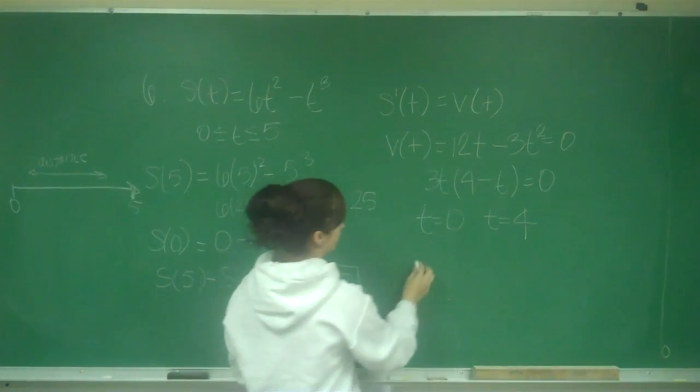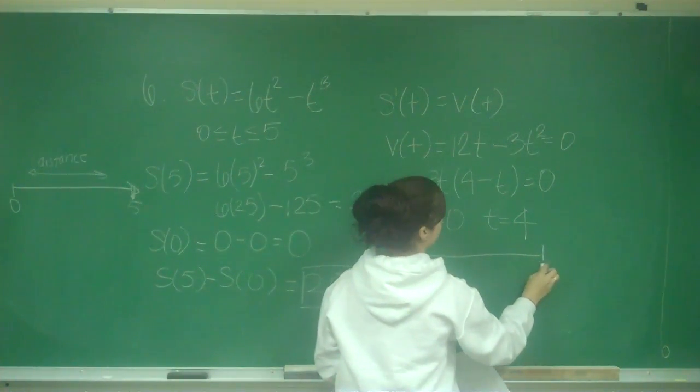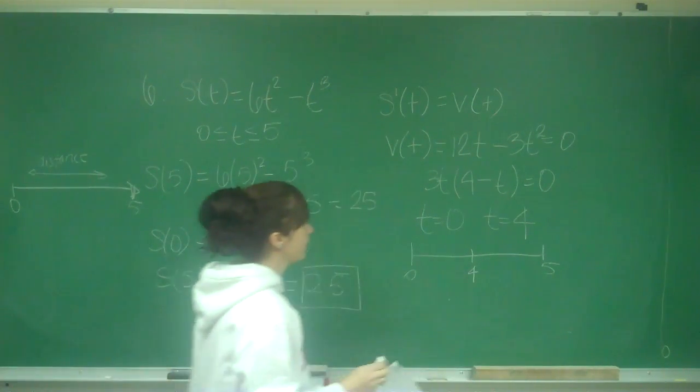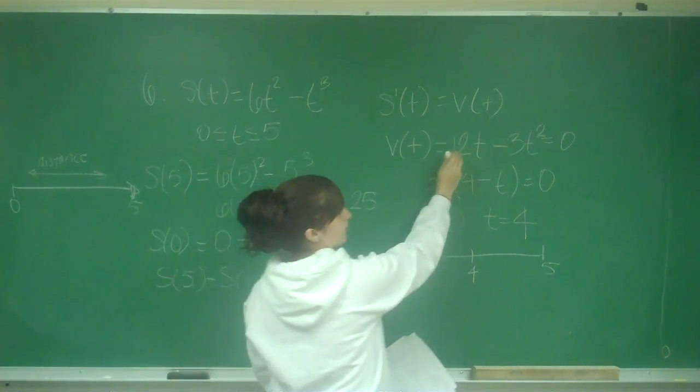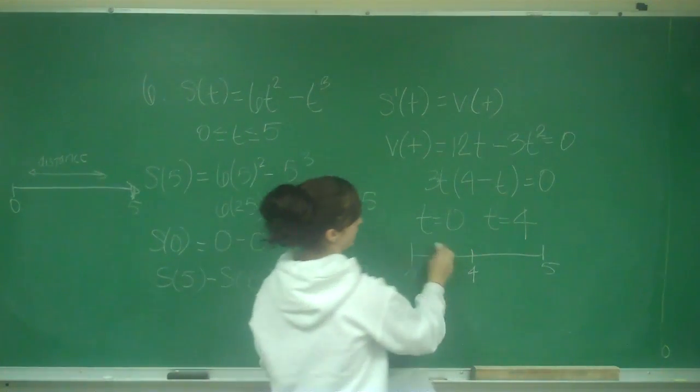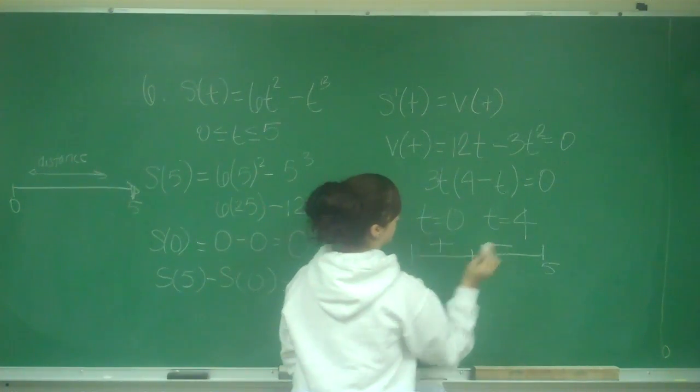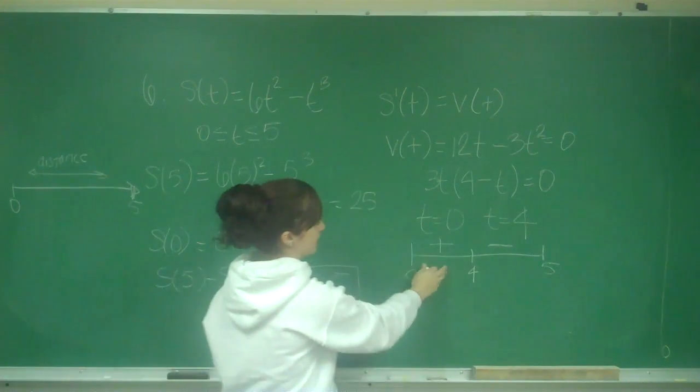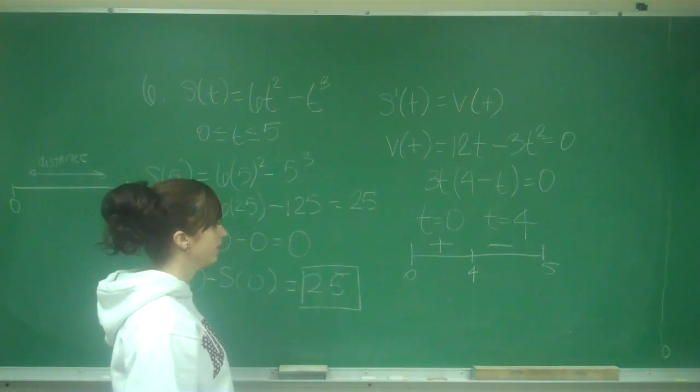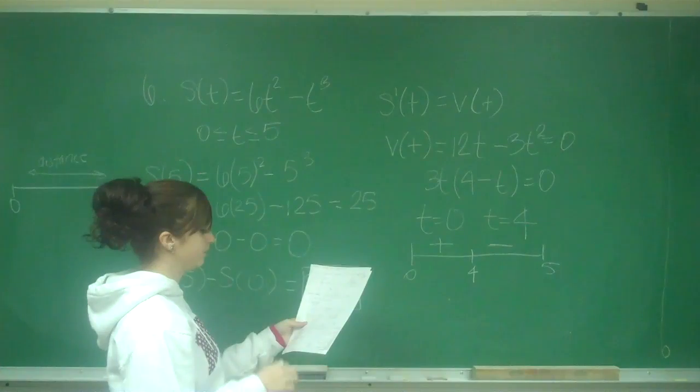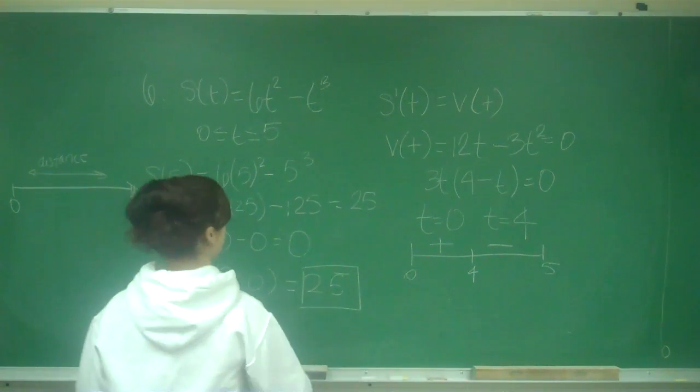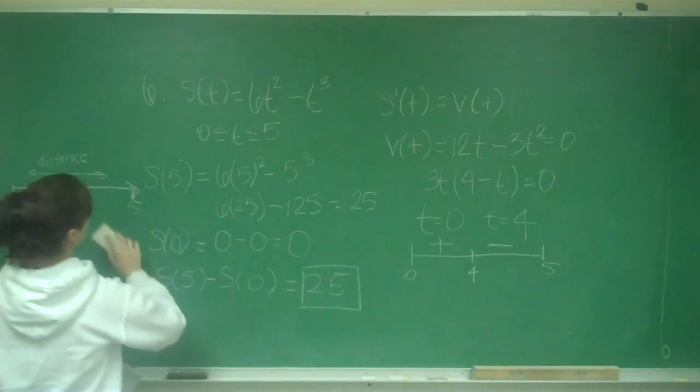So when I put them on a number line test from 0 to 5, so I have 0, 5, and 4. And I'm going to plug values into my velocity equation in between there, and I'm going to get here is positive and here is negative. So if you plug 1 into here, 12 minus 3 is a positive value.